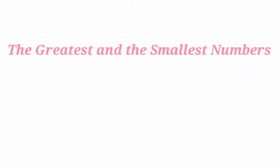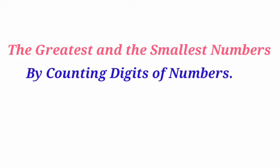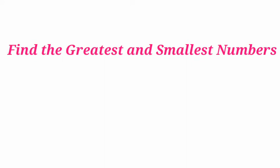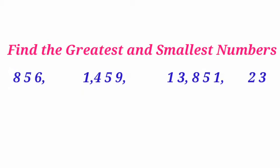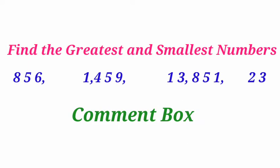I think now you have understood how to find the greatest and smallest numbers by counting digits. Now I want to give you one problem — solve it and write your answer in the comment box. The problem is: 856, 14,159, 13,851, and 23.